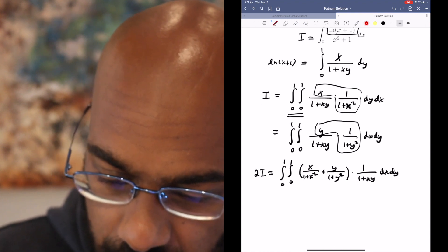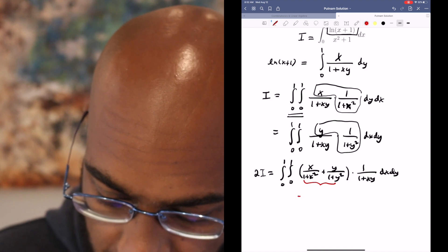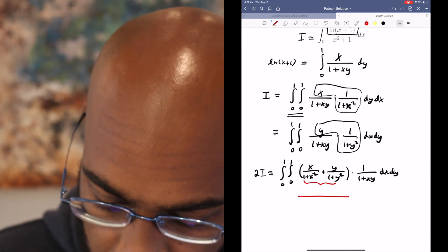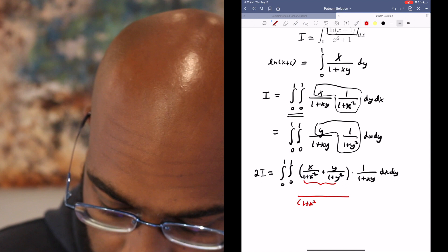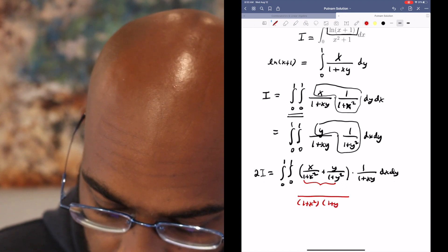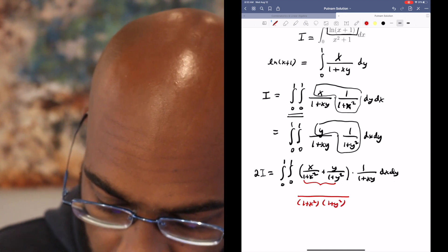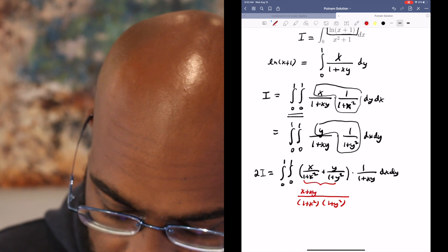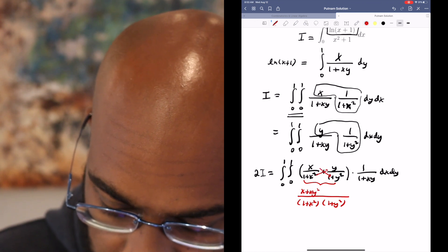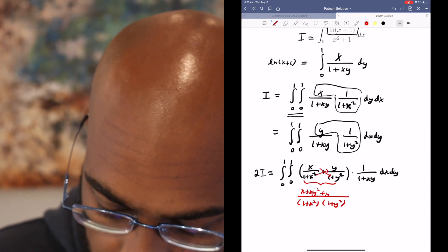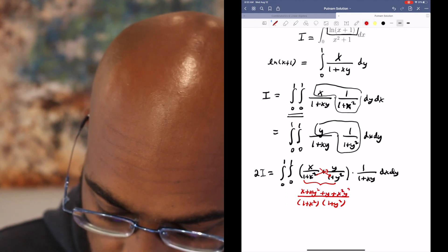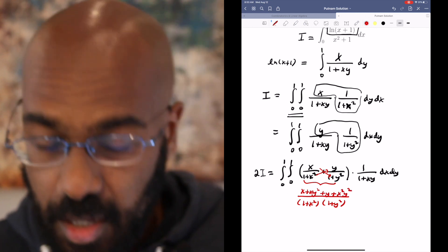This piece right here, we can find a common denominator. If we do, we'll get 1 plus x squared times 1 plus y squared, and then we'll get x plus xy squared as this piece here, and then a y plus x squared y.